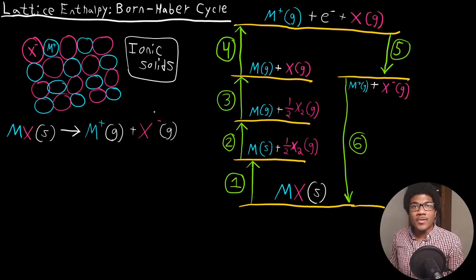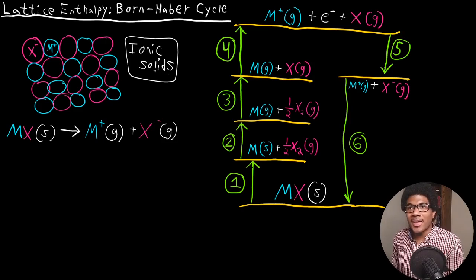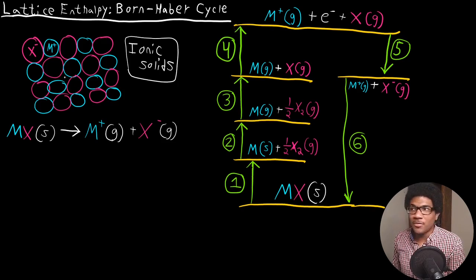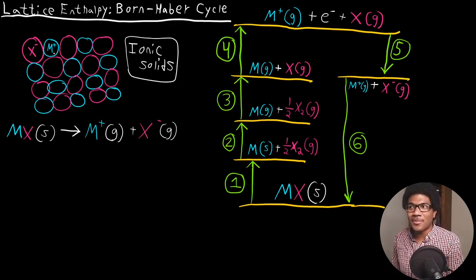In this video, we're going to look at the lattice energy and the Born-Haber cycle. This conversation really centers around ionic solids. Ionic solids are usually formed with some metal, M, that typically has a very low ionization energy, and some sort of halogen or compound on the far right of the periodic table that has a very high electron affinity. These atoms get together and form these really tightly packed ionic solids.